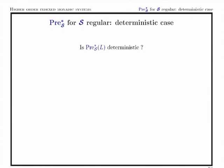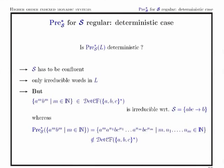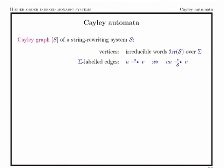To get a deterministic result we need at least two restrictions: the system has to be confluent — without confluence there is a kind of non-determinism — and we need to work only with irreducible words with respect to the string rewriting system. However, even with these restrictions, there is an example of a deterministic context-free language where applying a single-step rule gives a context-free language that is not deterministic context-free. So to understand what happens with determinism, we need to use something called Cayley automata.